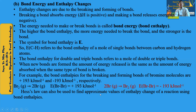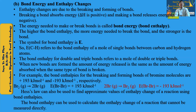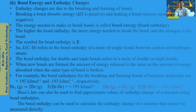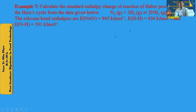You can also use Atomview — an approximate value using Atomview — to calculate the enthalpy change of a reaction that cannot be measured directly. The standard enthalpy change of a reaction, such as the Haber process, can be calculated using Atomview.